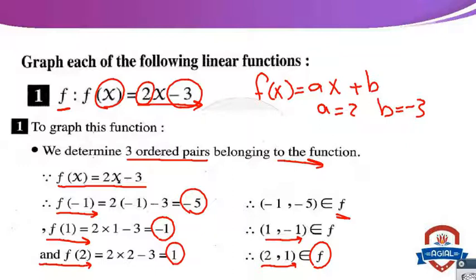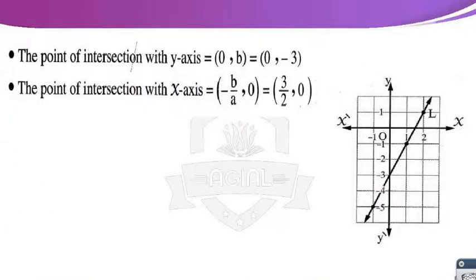How to graph the linear function? We set up the coordinate axes — X-axis and Y-axis — with the origin point, marking 1, 2, 3 and negative 1, negative 2 along each axis. We then plot the three ordered pairs on the coordinate plane.